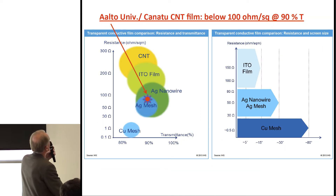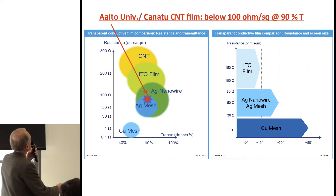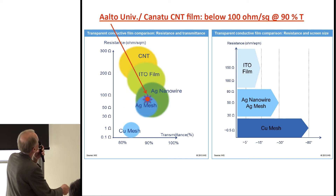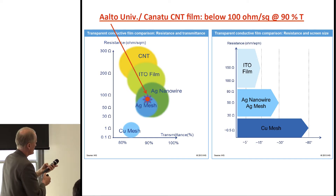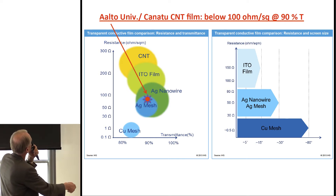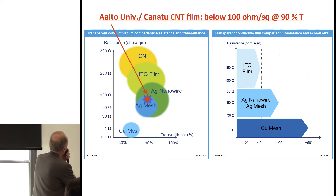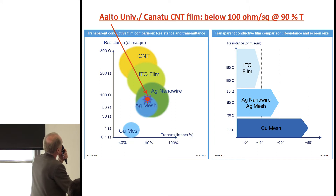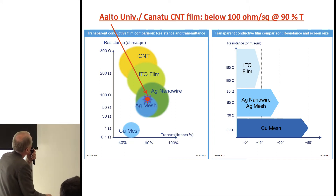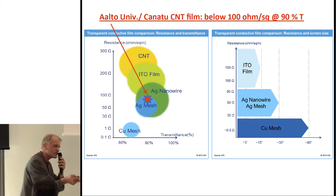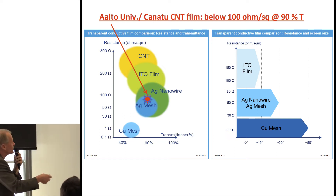What materials are people using? ITO is the dominant one, and then there are new ideas like nanowires, metal mesh, and carbon nanotubes — which used to be less conductive. Now, at Aalto and in our startup, we have been able to push nanotubes to become competitive. Thinking about quantum computing applications, if we could find something suitable — maybe not computing itself, but something simpler — that could be the way to go in Finland.